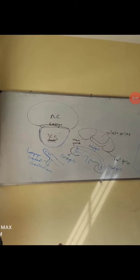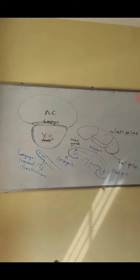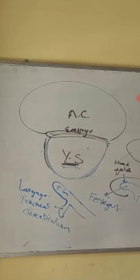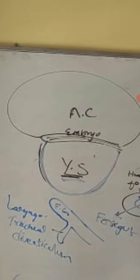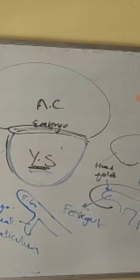Hello everyone, welcome to our YouTube channel Logic Medico. Today's interesting topic is development of the respiratory tract. This is an embryo in the form of a disc shape. Ventral to the embryo there is a cavity called the yolk sac, dorsal to the embryo there is a huge cavity called the amniotic cavity. At the fourth week of intrauterine life...